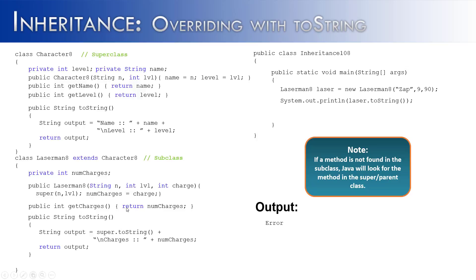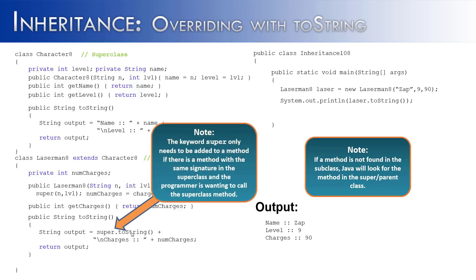Adding super.toString() gives us the desired output: name zap, level 9, and charges 90. Please note: many beginning programmers start using super in front of all their methods when they start with inheritance. The keyword super is only needed when there is a method with the same signature — as in the case of toString. That's when you add super, if you want to use the superclass method as opposed to the subclass method.